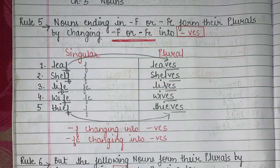Even if I have F or if I have FE, it will be changing into VES. Wife becomes wives. Thief becomes thieves. You have to make sure that the pronunciation is also correct — thief, thieves; wife, wives. Leaves, leaves. This is how our F changes into VES, and similarly my FE will also change into VES. This is how I will be changing my singular into plural.